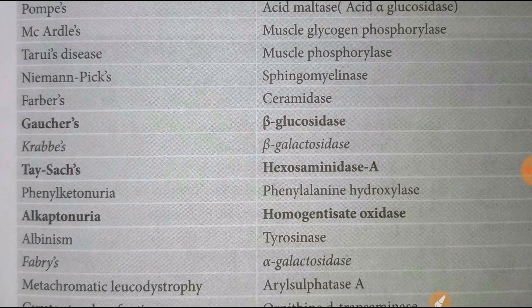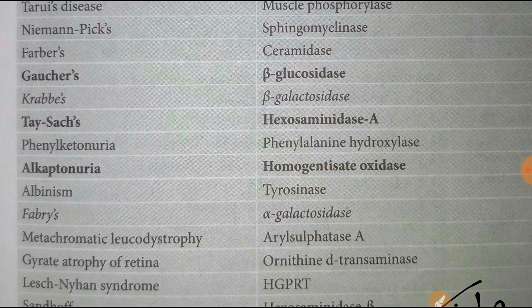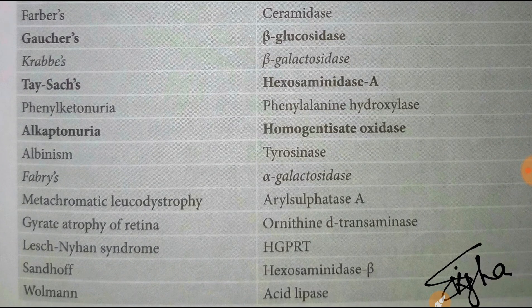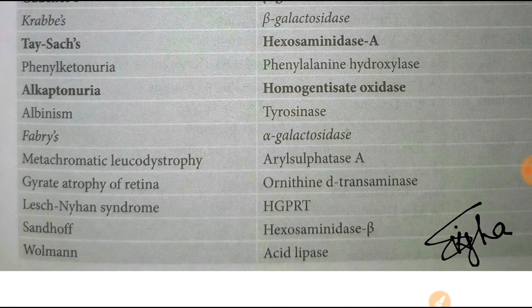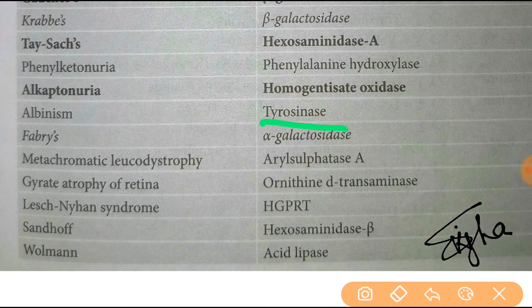Gaucher's disease — beta glucosidase. Krabbe disease — beta galactosidase. Tay-Sachs syndrome — hexosaminidase A. Phenylketonuria — phenylalanine hydroxylase. Alkaptonuria — homogentisate oxidase. Albinism — tyrosinase.